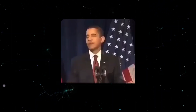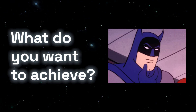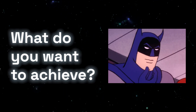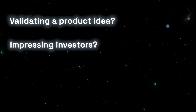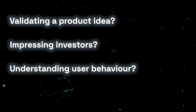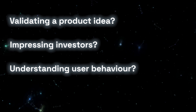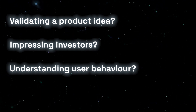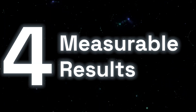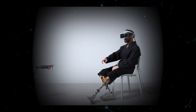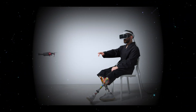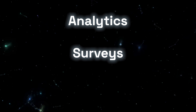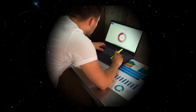Number three: clear objectives. Be clear about what you want to achieve with your MVP. Is it validating a product idea, impressing investors, or understanding user behavior? Your MVP should be built with these objectives in mind. Number four: measurable results. Incorporate ways to measure user engagement and feedback, whether it's through analytics, surveys, or direct user feedback channels.